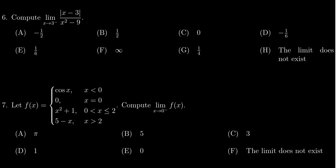In this video we present the solution to question number 6 from practice exam 2 from math 1210, in which case we're asked to compute the limit as x approaches 3 from the left of the absolute value of x minus 3 over x squared minus 9.